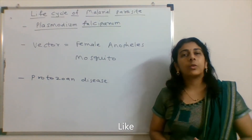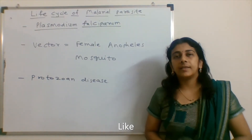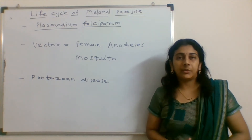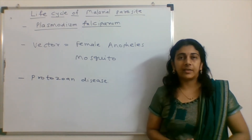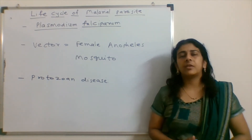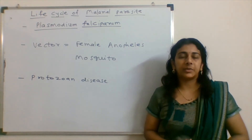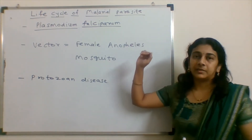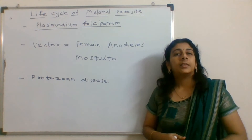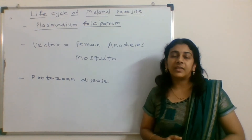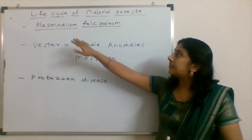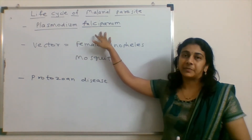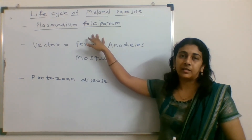Malaria is a protozoan disease. Protozoa are unicellular eukaryotic organisms which cause many diseases in humans, one of them being malaria. The causative agent for malaria is Plasmodium falciparum, which is a protozoa.